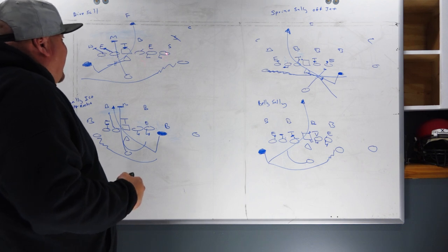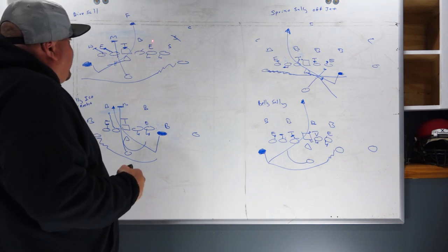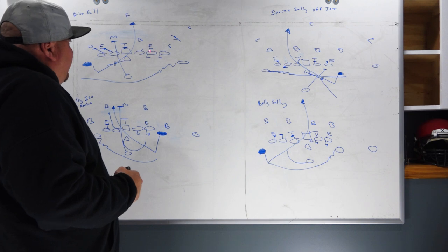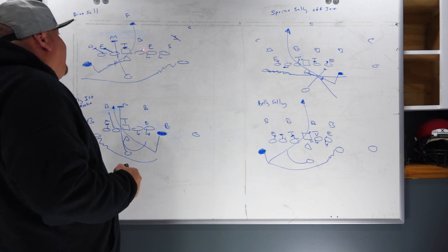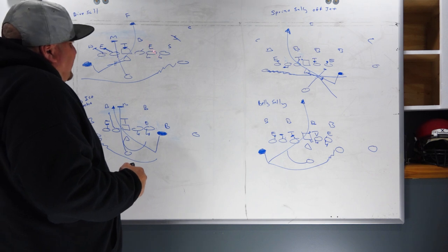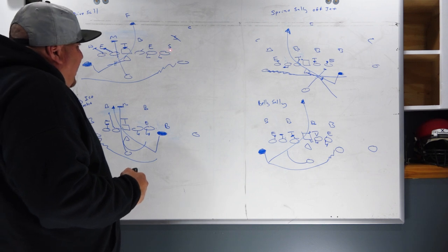On the play side, which is the right guard, right tackle, right tight end, we will pass set. The technique is we are going to read this defender right here. These two guys will read this four technique or five technique defensive end. If he spikes to the B gap, the guard will take him and the tackle will climb to the play side linebacker. If he spikes to the C gap, the tackle will take him and the guard will climb.